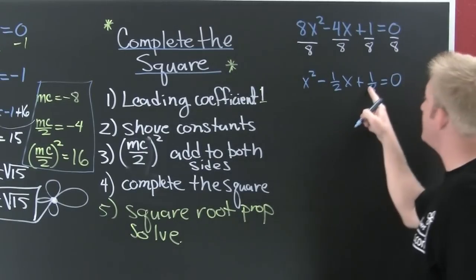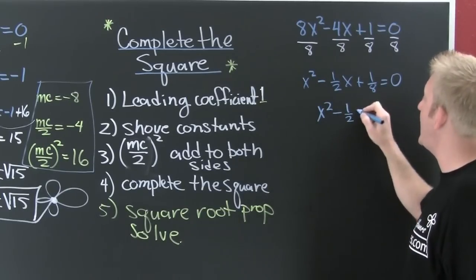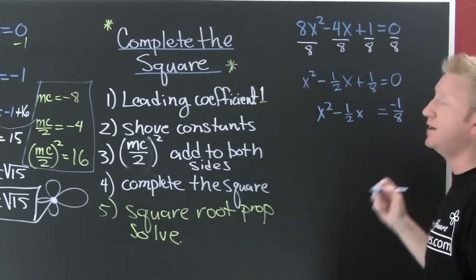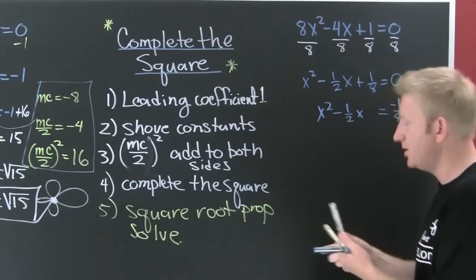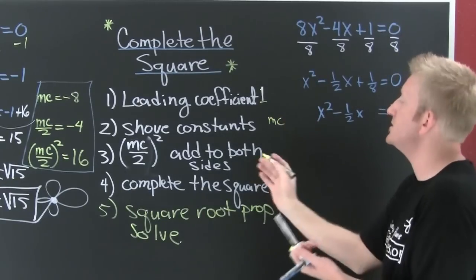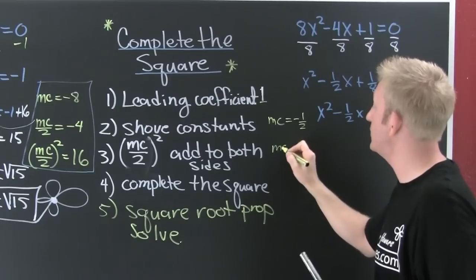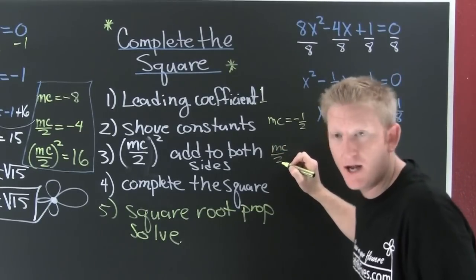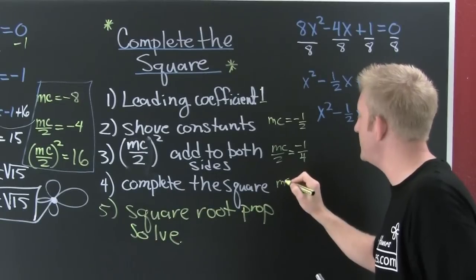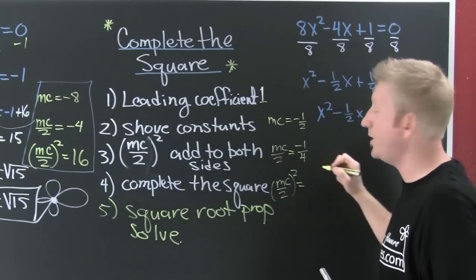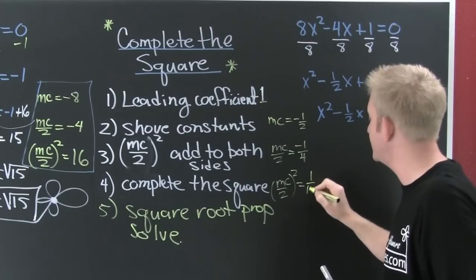So now we want to shove our constants. That means get that to the other side. So then in doing so, I have x squared minus 1 half x is minus 1 eighth. So now I need to take half the middle coefficient squared and add that to both sides. So what is my middle coefficient? This is side work. My middle coefficient is, oh no, minus 1 half. Then my middle coefficient over 2. When you're having a fraction, double the denominator. So then this is going to be minus 1 fourth. So then my middle coefficient over 2 squared. When you square a fraction, that's the squares of the numerator divided by the squares of the denominator. So this is 1 over 16.